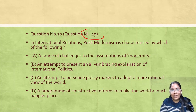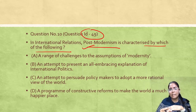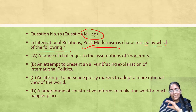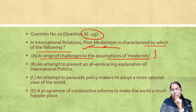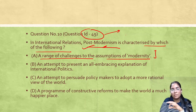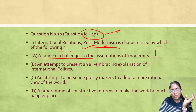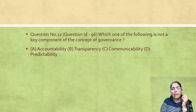Question ID 49: In IR, post-modernism is characterized by which of the following? The correct answer is: a range of challenges to the assumptions of modernity. Post-modernism came after modernism — it challenges all the assumptions we have created about modernity. Thinkers like Foucault and Derrida are considered postmodernist thinkers.